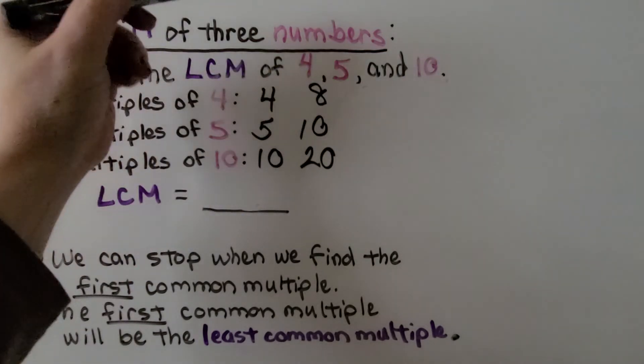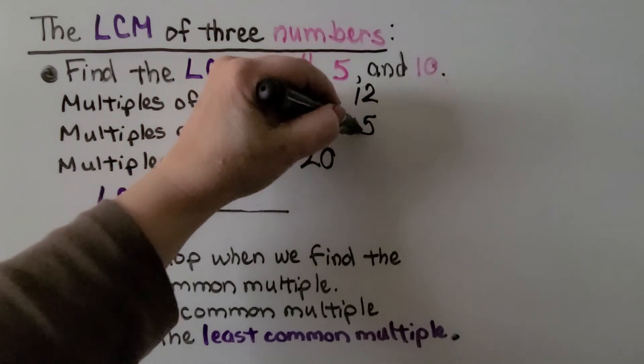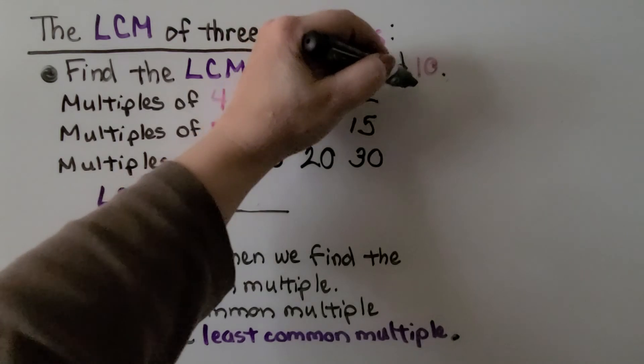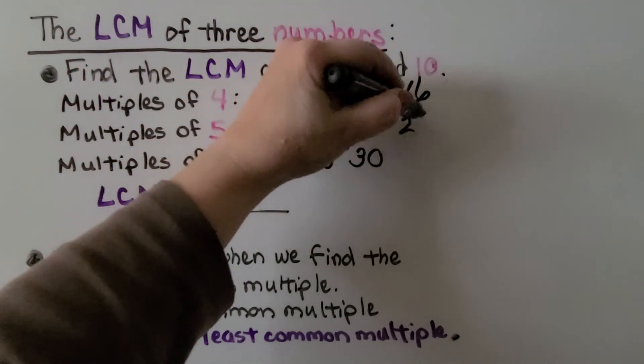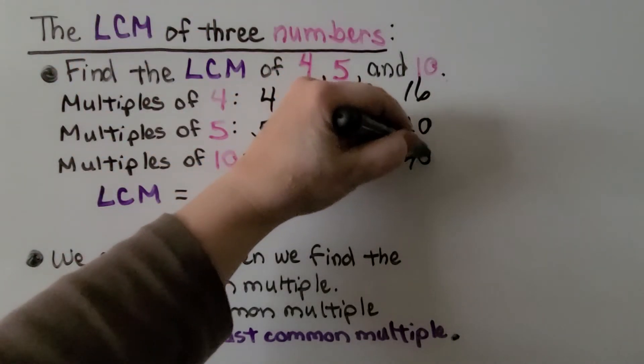We can do the times 3's. 4 times 3 is 12. 5 times 3 is 15. 10 times 3 is 30. 10 times 4 is 40. We got the times 4's.